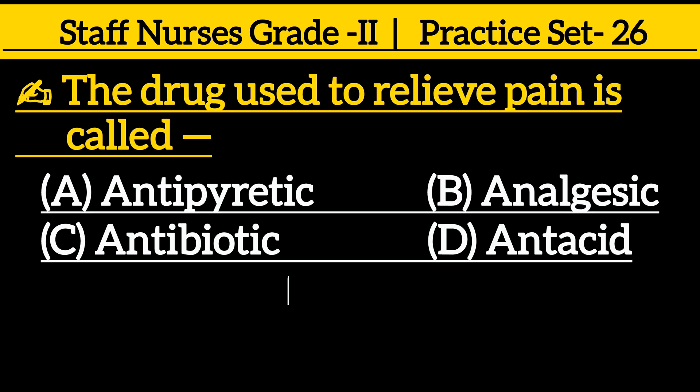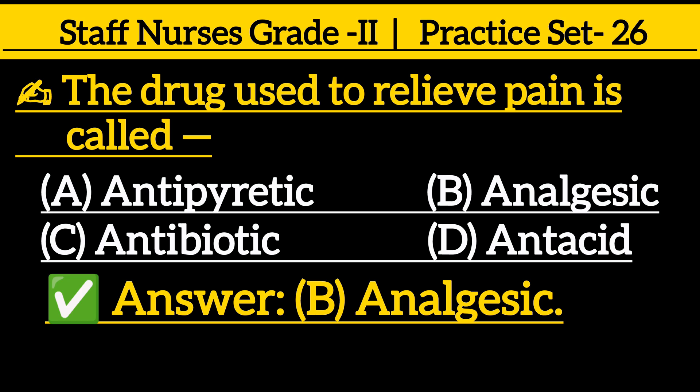Next question: the drug used to relieve pain is called — option A: antipyretic, option B: analgesic, option C: antibiotic, option D: antacid. The correct answer is option B: analgesic.